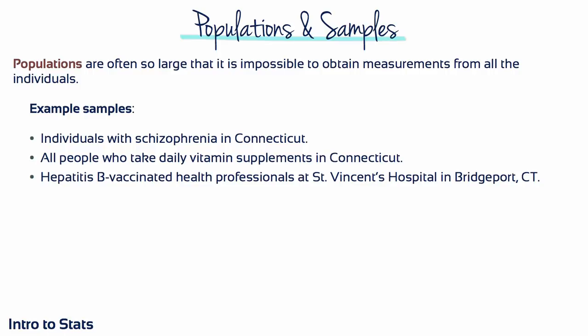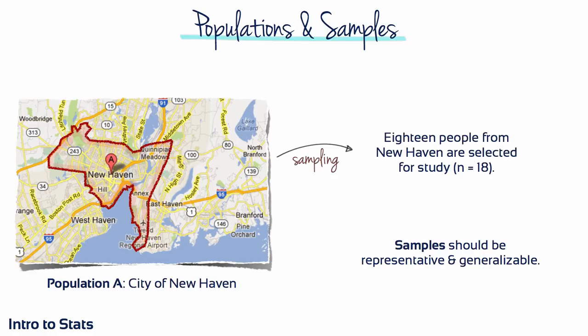This sample of people is intended to be representative of its population. Just as with populations, samples can vary in size — there's likely to be hundreds or thousands of people in these samples, or one study might examine a sample of only 18 people. Samples should be representative and generalisable. A researcher studies a representative sample and then generalises the results from the sample to the population.